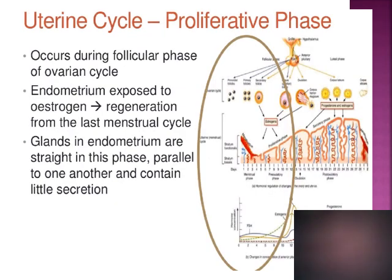The uterine cycle is divided into a proliferative phase and a secretory phase. The proliferative phase occurs before ovulation, during the follicular phase of the ovarian cycle. The endometrium, exposed to estrogen secreted from the granulosa cells, undergoes regeneration from the last menstrual cycle — specifically from the basal layer. At this time, the glands in the endometrium are straight and parallel to one another and contain very little secretion.